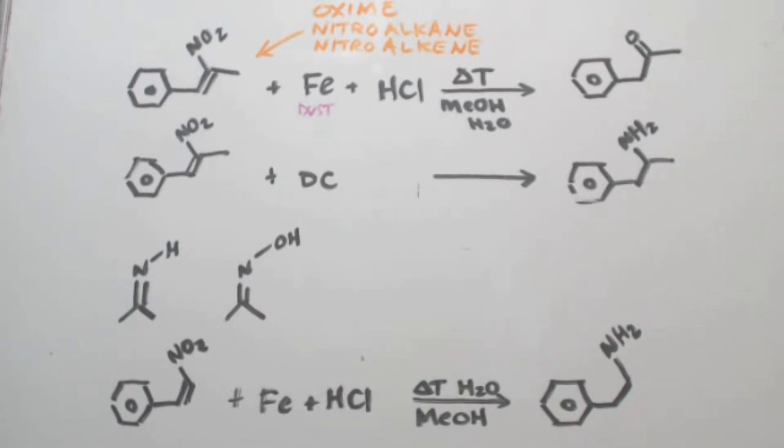You use red phosphorus and iodine, a little bit of water, reflux it, and you turn that phenopropanolamine into amphetamine.